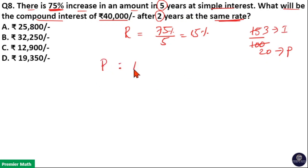Then take the ratio between principal and amount to calculate the compound interest for ₹40,000. Here compound interest is calculated at the same rate. That is why principal is equal to 20 parts for 1 year and amount is equal to principal plus interest, that is 20 plus 3, which is 23 units for 1 year.